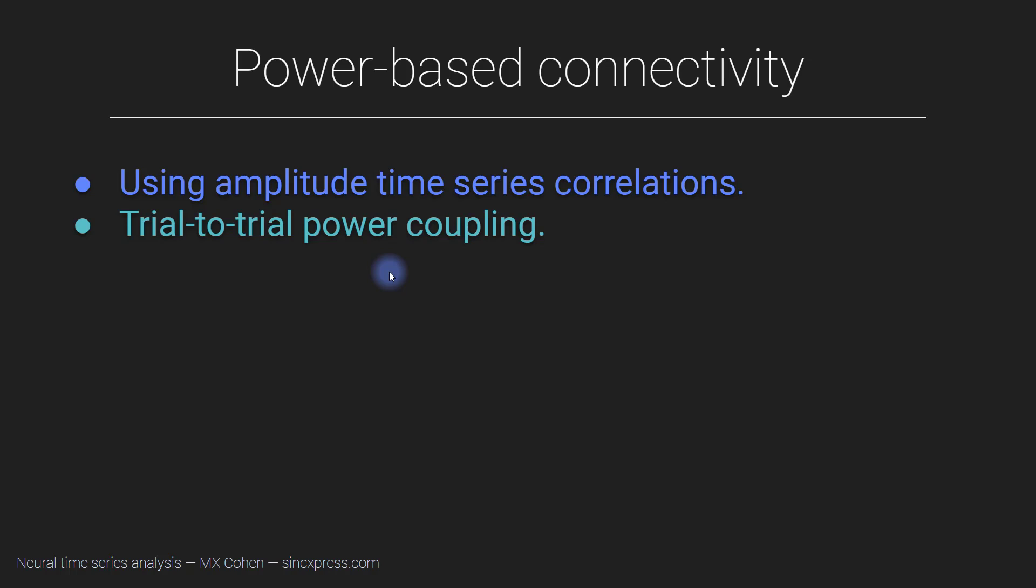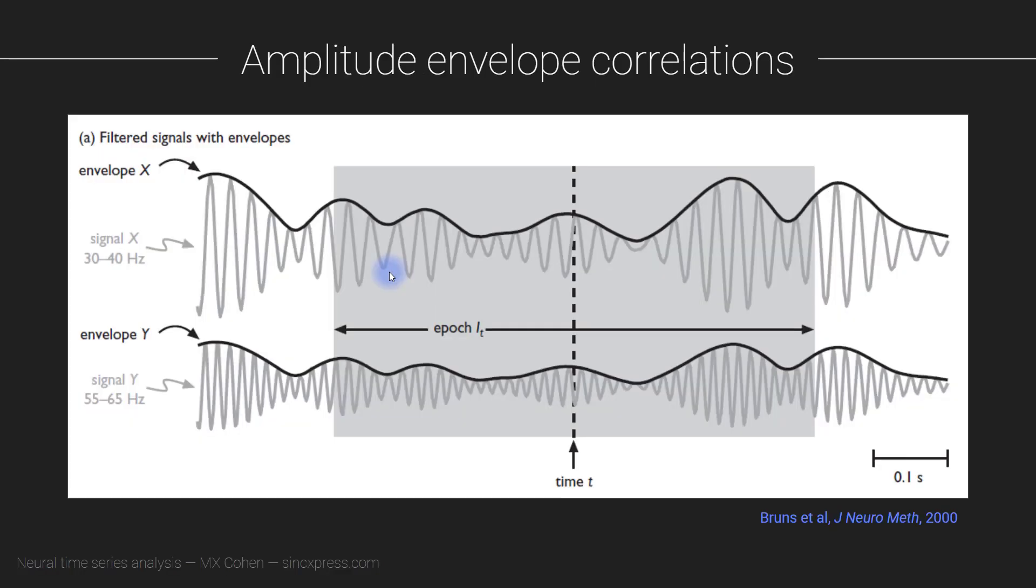Okay, enough said. So I will introduce you to two methods for power-based connectivity. One of them is called amplitude envelope correlations. It is a pretty straightforward procedure.